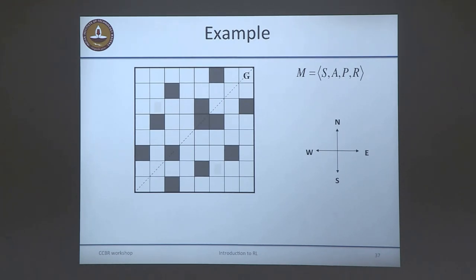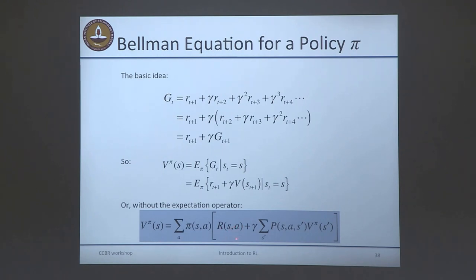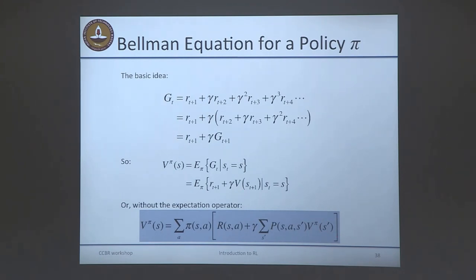Now with the MDP components in place, we can revisit the Bellman equation. I can rewrite the Bellman equation without the expectation operator as: pi(s,a) — the probability of picking action a in state s — times the expected reward R(s,a) plus the sum over states s' of P(s,a,s')*V^pi(s'). The expectation of r_{t+1} is R(s,a), and P(s,a,s') is the transition probability. This gives a set of linear equations, one for each state, where V^pi(s_1), V^pi(s_2) etc. are variables. Because P is a stochastic matrix, there is a unique solution, so you can just solve the linear system to find V^pi.